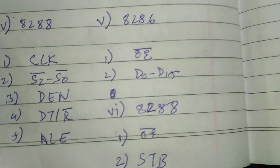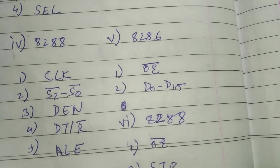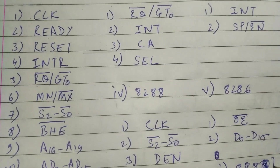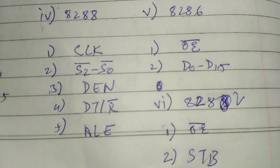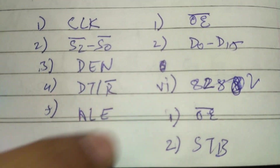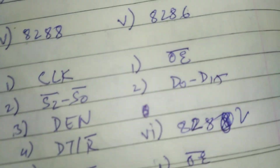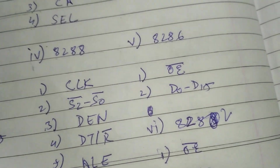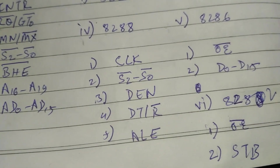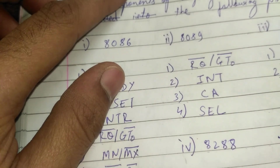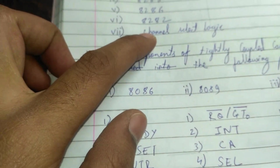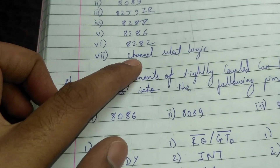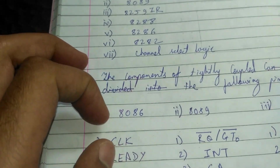The sixth component is 8282 — it has two pins: OE bar and STB. The seventh component is channel select logic, which does not have many pins.